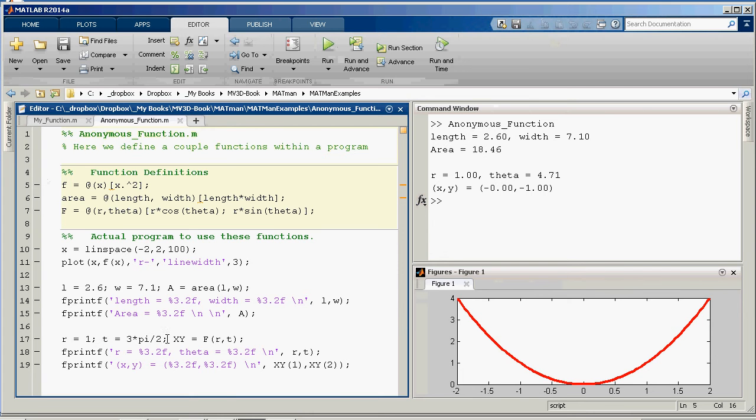We create, before we even do the program, we define the functions. So we have one function called little f. It takes x as an argument, as an input, and it returns x squared. Now if x happens to be a vector, then we want to make sure that we square the terms in that vector one at a time. So that's where that dot squared. In case it's a vector, you don't want it multiplying it by itself. You want it to just square every single term in the vector. So hence the dot squared. So basically f is just x squared.